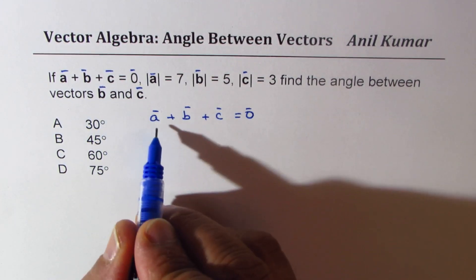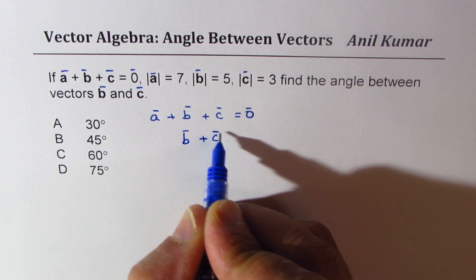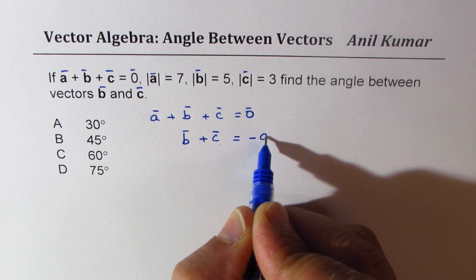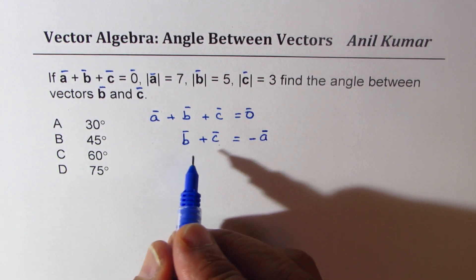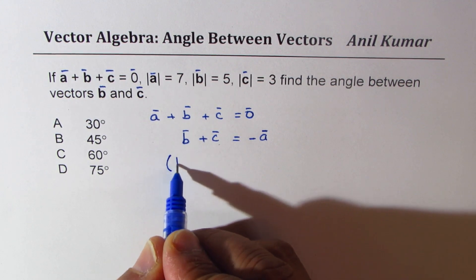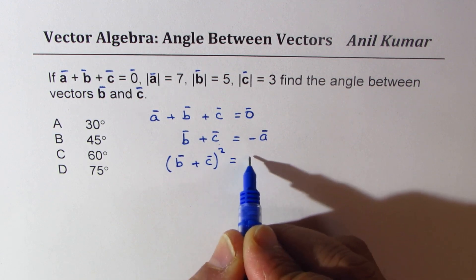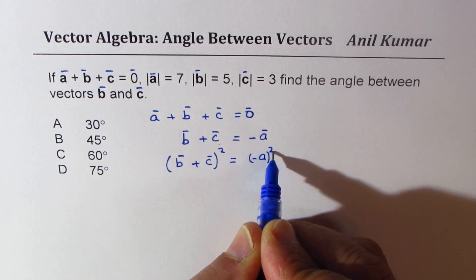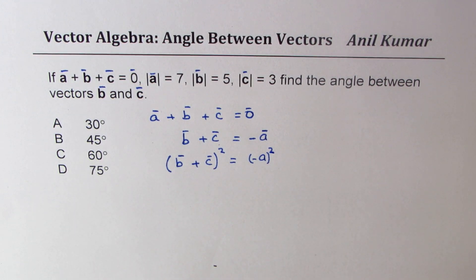Since we need the angle between b and c, let's take a to the other side, so we get vector b plus c equals minus a. Now let us square both sides. If we square both sides, we get (b + c)² equals (-a)².